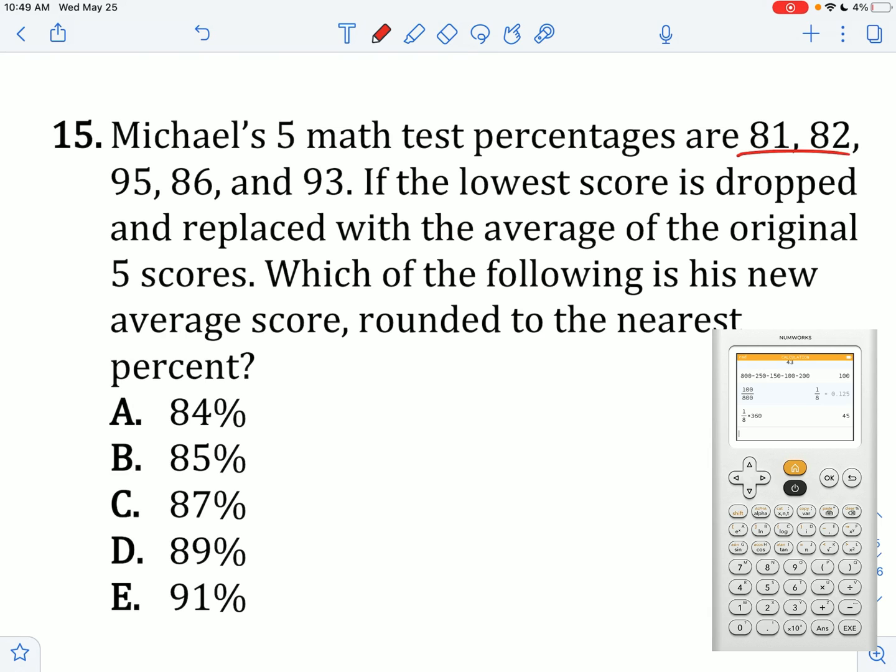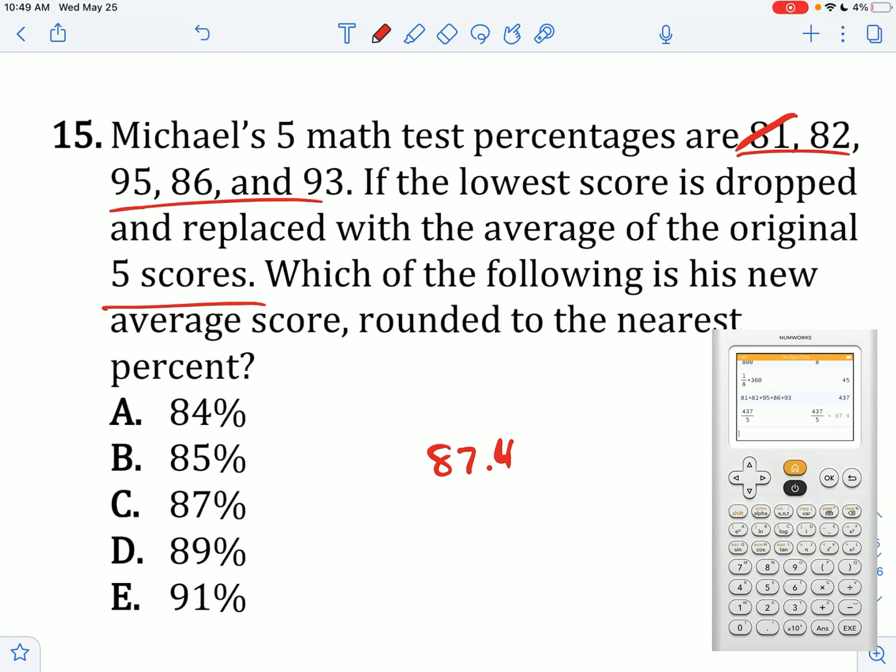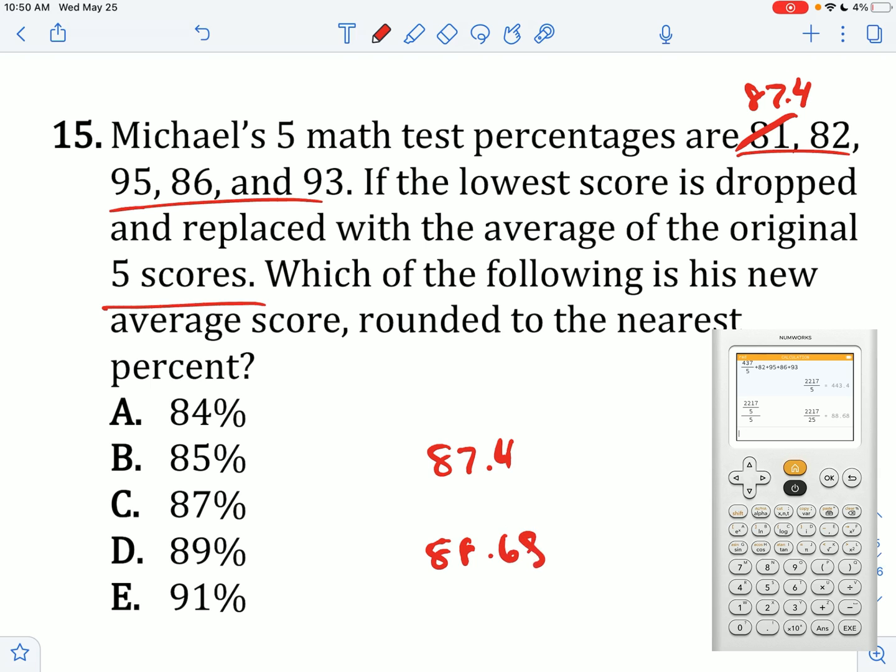Michael's five math test percentages are 95, 86, and 93. If the lowest score is dropped and replaced with the average of the original five scores, which of the following is the new average score? First find the original average by adding all these values up: 95 plus 86 plus 93. Divide that by the total, you end up getting 87.4 as your original average. Now, we need to get rid of 81 and replace that with 87.4 and calculate the average again. Add 82 plus 95 plus 86 plus 93. Divide that by 5, we end up getting 88.68, which is 89%.